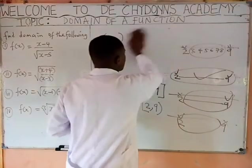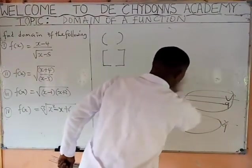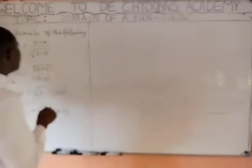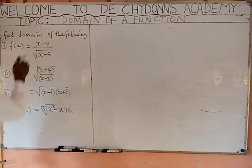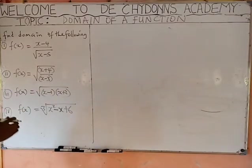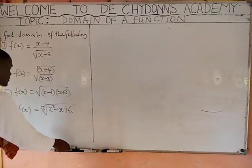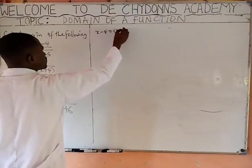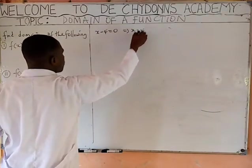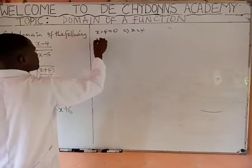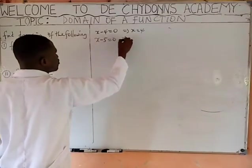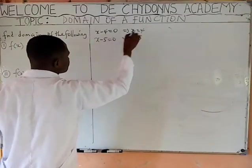Question number 1 says: find the domain of f(x). What you do first is equate x minus 4 to 0, which gives you x equal to 4. Then equate x minus 5 to 0, which gives you x equal to 5.